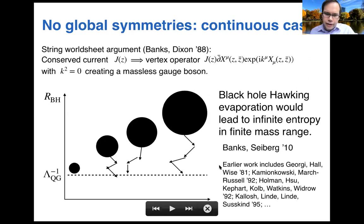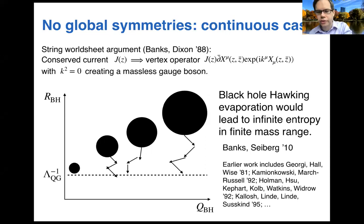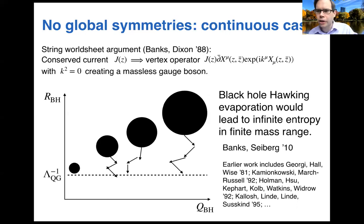Hawking's calculation tells us the black hole will gradually shrink and emit particles. Because there's no external field associated with the global symmetry, there's no preference for emitting things with one charge or the other, so the charge of the black hole will random-walk as it becomes smaller. If you start with a very big black hole with a very big charge, you end up with a big charge remaining when the black hole reaches cutoff size. The argument, nicely written down by Banks and Seiberg, is that black holes at the cutoff size can in principle have arbitrarily large charge, leading to infinitely many different black hole states — causing problems with black hole thermodynamics and holographic arguments.